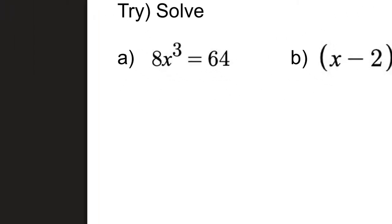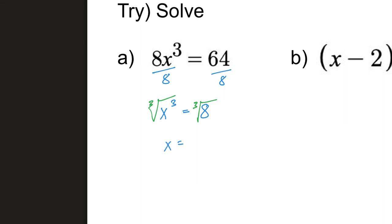Let's go with the first one: 8x to the third power. First thing I'm going to do is get rid of that 8 — divide both sides by 8 — and I get x to the third power equals 8 (since 64 divided by 8 is 8). I'll take the third root of both sides; third root is odd so no plus or minus. The third root of 8 is 2, so x = 2.